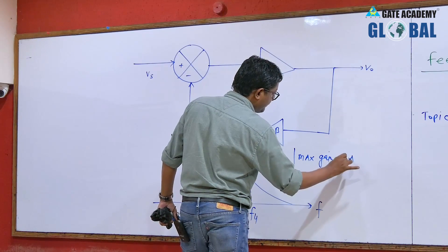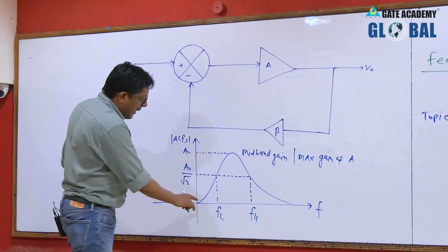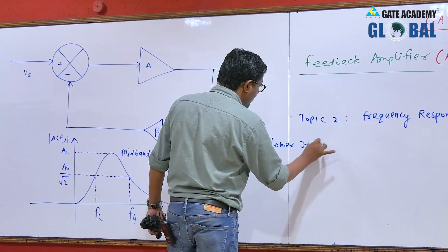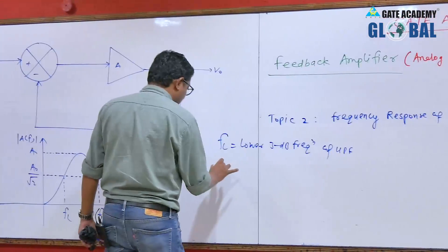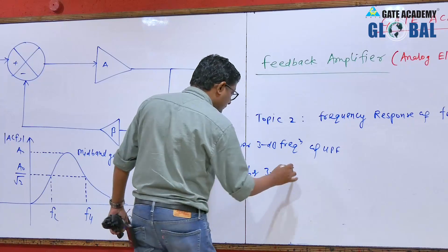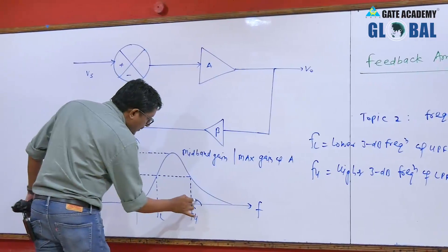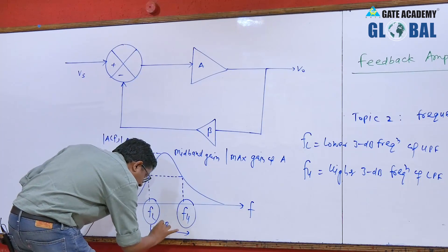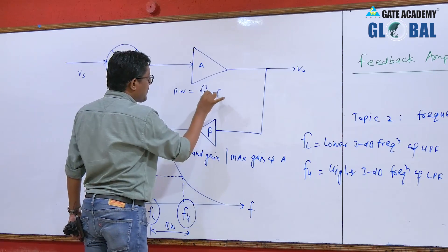Maximum gain of A. This FL is referred as the lower 3dB frequency, or cutoff frequency — the lower 3dB frequency of a high pass filter. FH is the higher 3dB frequency of a low pass filter, the cutoff frequency for the low pass filter. The difference FH minus FL is referred as bandwidth — the bandwidth of the basic amplifier.